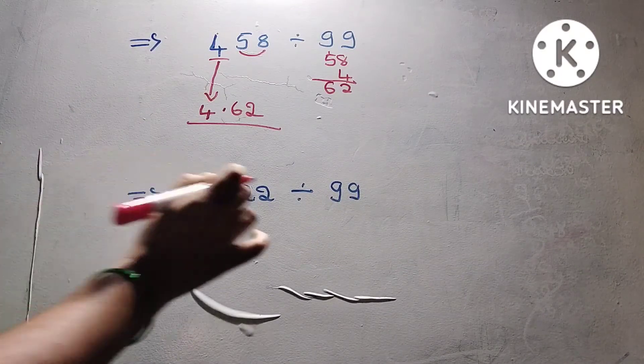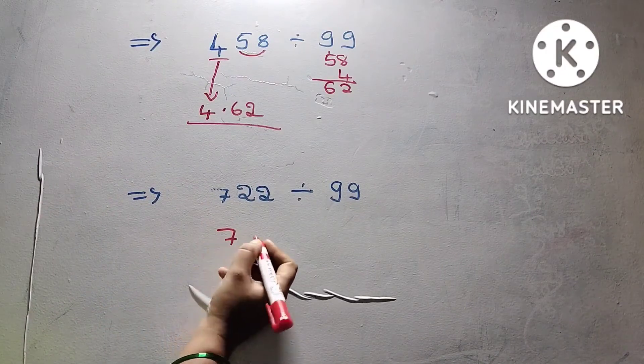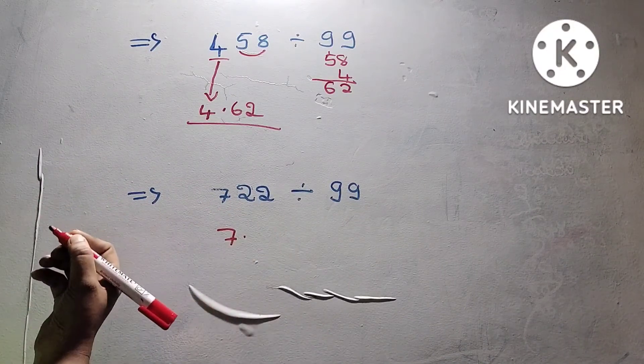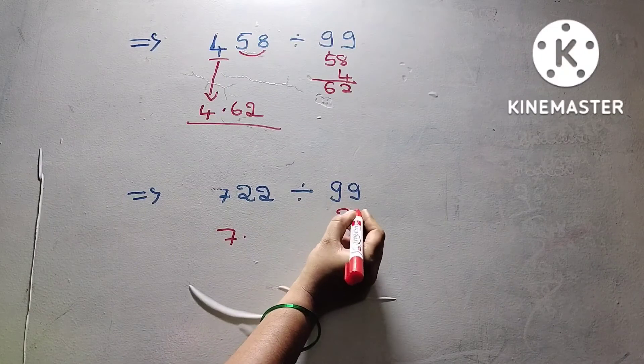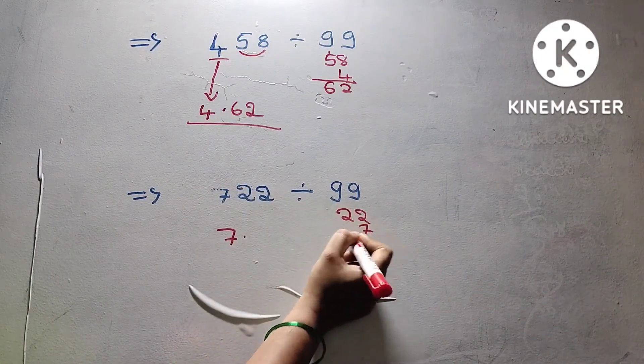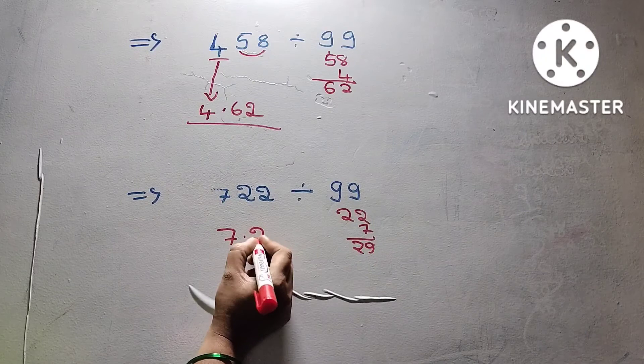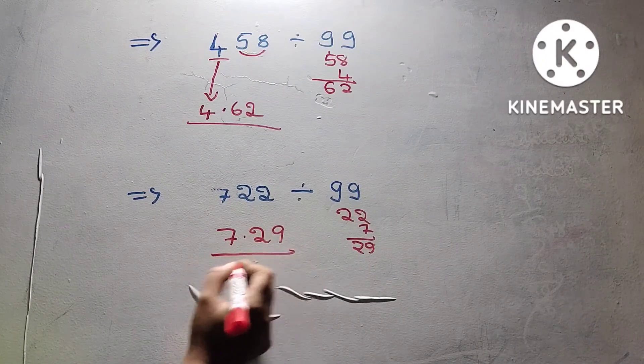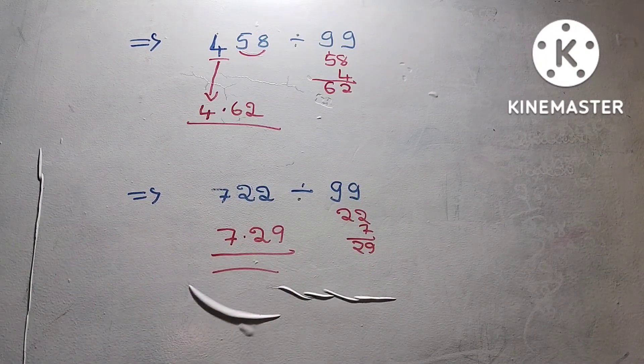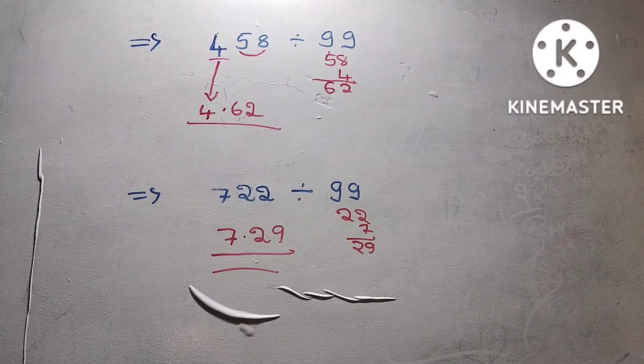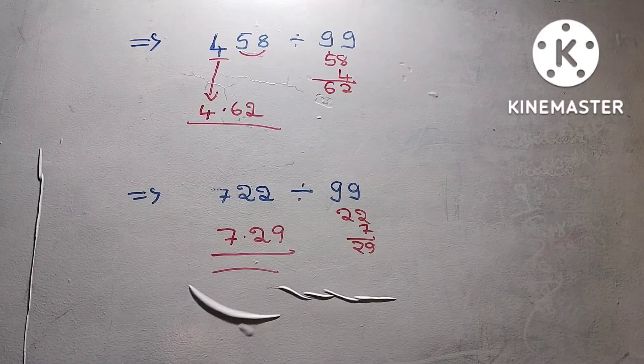Next example: seven, then the next two digits. Add the first and get seven point twenty-nine. This is the second question and answer, friends. Practice this trick.